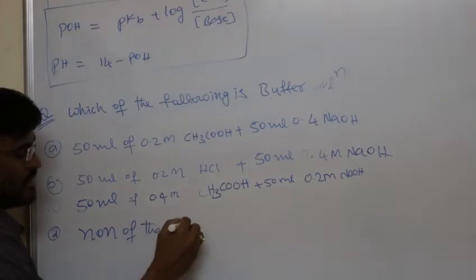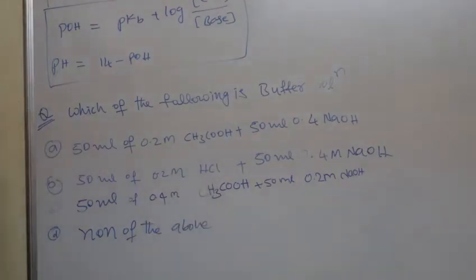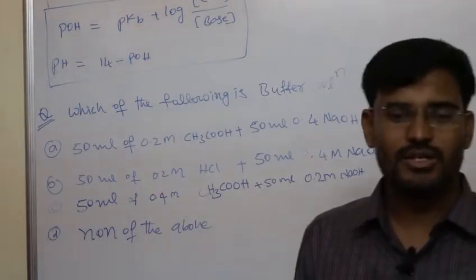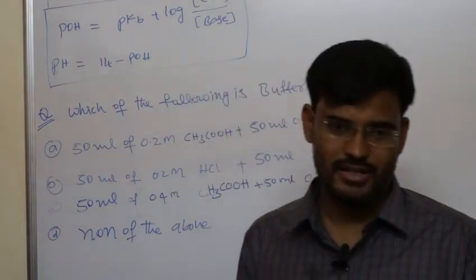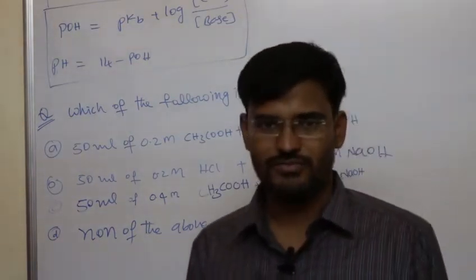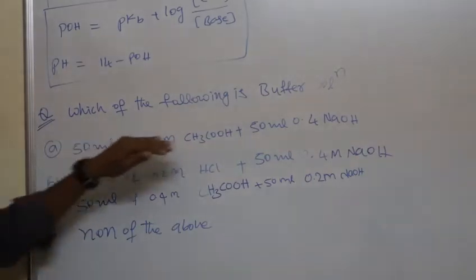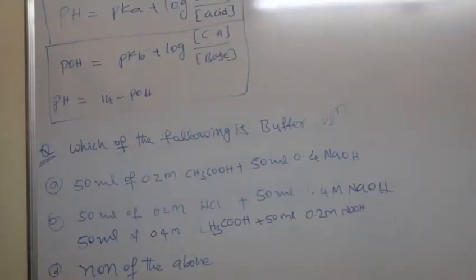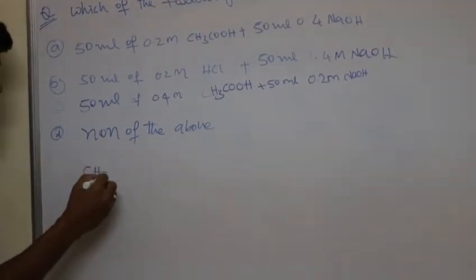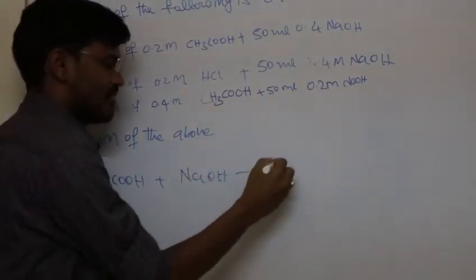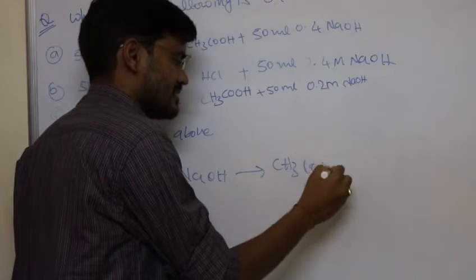A buffer is a solution having a weak acid and its conjugated base, or a weak base and its conjugated acid. For each option we should examine the reaction between components. We convert them into milliequivalents. Option A involves reaction between acetic acid and sodium hydroxide, which leads to formation of sodium acetate plus water.